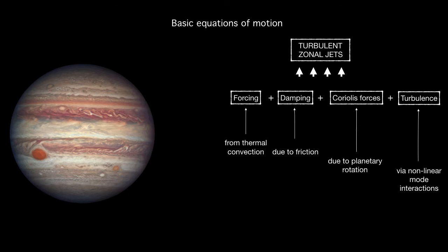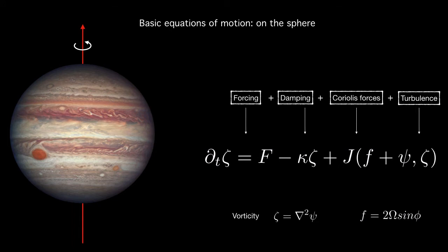So the basic ingredients involved in the formation and evolution of zonal jets are turbulence and rotation, and alongside a layer of the atmosphere may be forced and damped by layers below it from thermal convection and friction respectively. So these processes can be put together in a differential equation. This is a statement of the barotropic vorticity equation where a forcing F is applied and a linear damping with coefficient kappa is also applied. So in general the Coriolis forces and turbulence appear in the Jacobian J term.